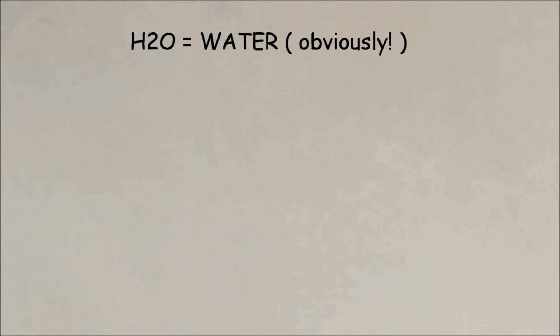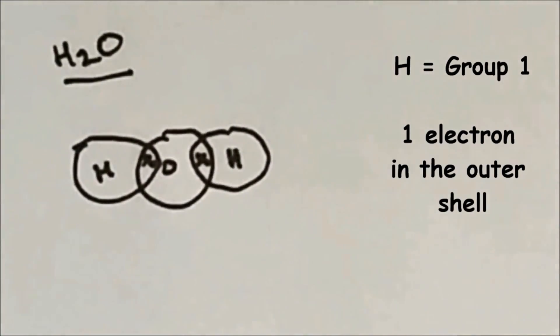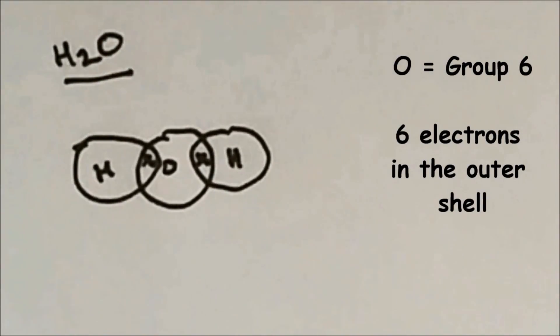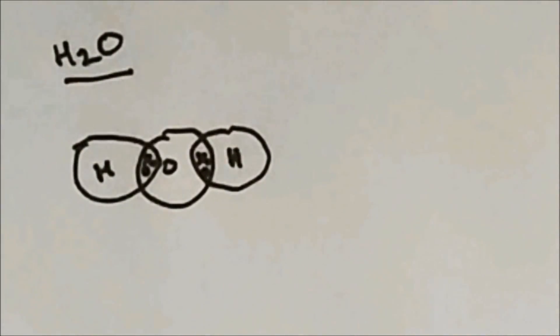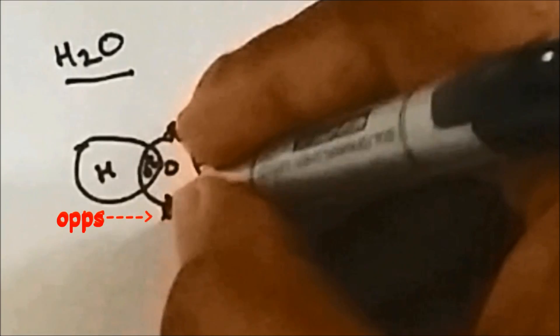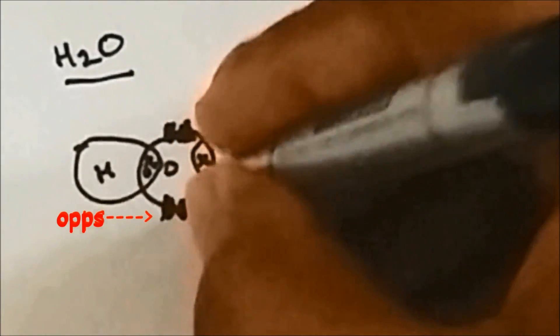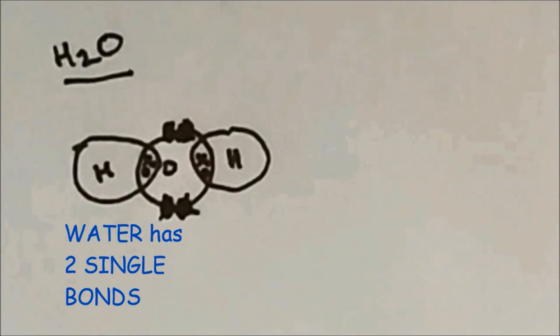The next molecule is H₂O, which is water. There are two hydrogen atoms and one oxygen atom, so oxygen is the central atom with two hydrogens surrounding it. Each hydrogen contributes one electron marked with a cross. Oxygen is in group 6, so it has six electrons in the outer shell — two are involved in the overlap and the leftover four are placed outside. So H₂O has two single bonds.